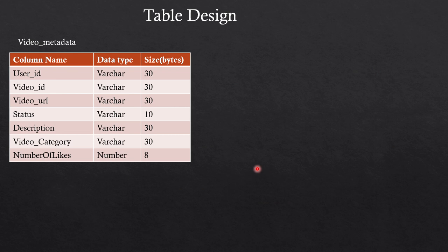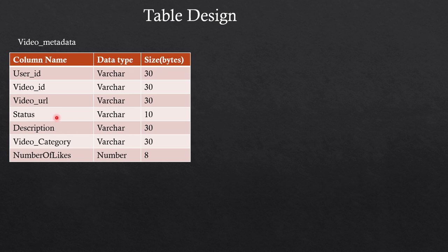Now let's talk about the tables required. The video metadata table contains: user ID, video ID, video URL (the URL in blob storage where the video is stored), thumbnail URL and thumbnail ID, and a status column indicating the current state of the video — whether it is uploaded, in-progress, or in-verification. Once status changes to 'uploaded,' the feed generator can pull it and add it to timelines. There is also a small description field and hashtags can be added as part of the description.